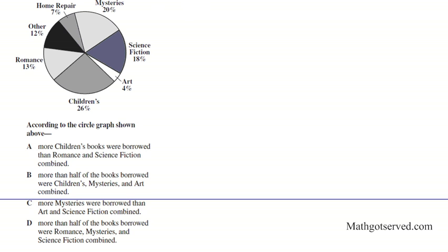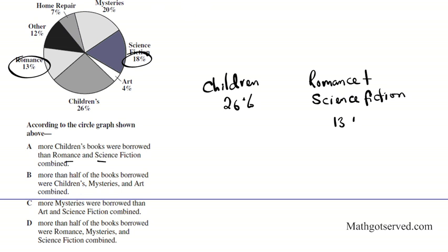Option A says, More children's books were borrowed than romance and science fiction combined. So we're going to be comparing percentages here. Children's books is 26%. Romance plus science fiction is 13 plus 18. If I add this up, I'll get 31%. So do we have more children's books than the combination of romance and science? Absolutely not. This is less. So this statement is false.